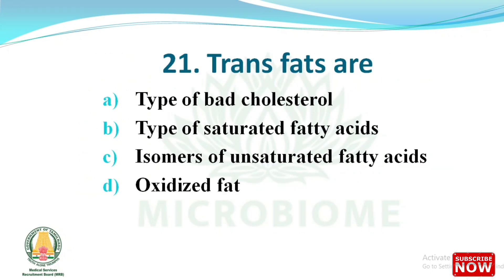Next question: trans fats are which of the following? The options are a type of bad cholesterol, a type of saturated fatty acid, isomers of unsaturated fatty acid, oxidized fat. The right answer is option C, isomers of unsaturated fatty acid.